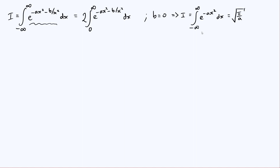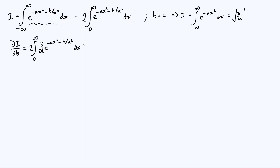What we're going to do is see how I changes as we change b. More specifically, we're going to take our I and differentiate it partially with respect to b. If we use the form with the two in front and differentiate with respect to b, what we get is two times the integral from zero to infinity of d/db of e to the minus ax squared minus b over x squared dx. The coefficient of b in the exponent is minus one over x squared, so we pull down a factor of minus one over x squared, giving two times the integral from zero to infinity of minus one over x squared times e to the minus ax squared minus b over x squared dx.